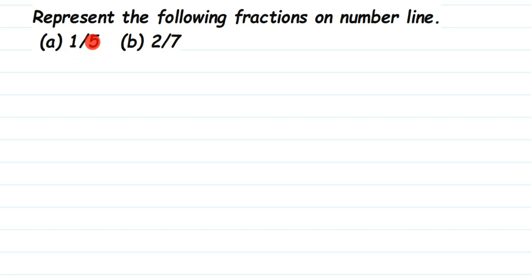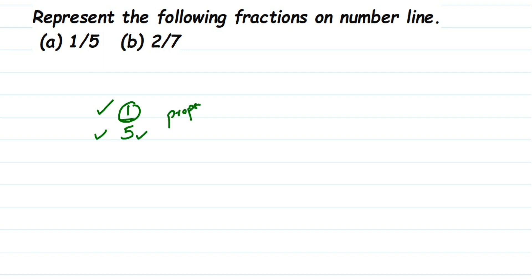We have 5 in the first question — 1 by 5 — and this number 1 by 5 is a proper fraction. A proper fraction always lies between 0 and 1. If you don't know what a proper fraction is, take the example 1 by 5. The number on top is called the numerator and the one on the bottom is called the denominator. When the numerator is smaller than the denominator, it's called a proper fraction. So 1 is smaller than 5, meaning numerator is smaller than denominator — it's called a proper fraction.